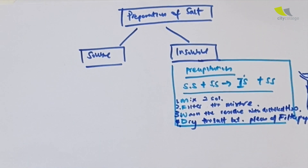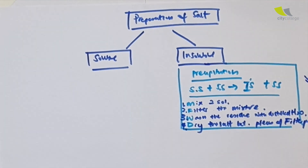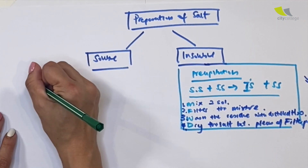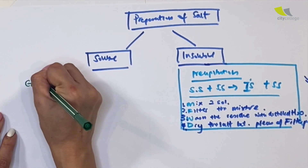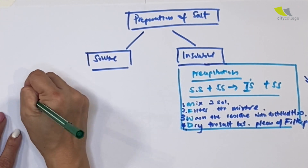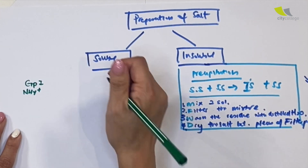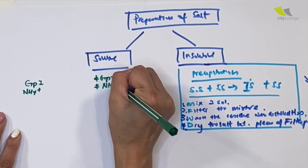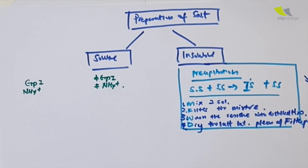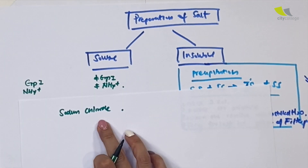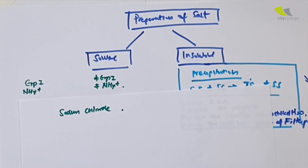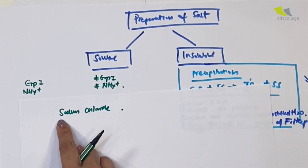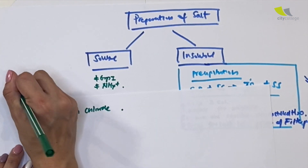Next up, we have soluble salt, which is a little bit different. You have to decide whether they are a group one salt or an ammonium salt, or they are not a group one salt and not an ammonium salt. For example, sodium chloride — since it's sodium and it's soluble, sodium comes from group one, so it's under that category.